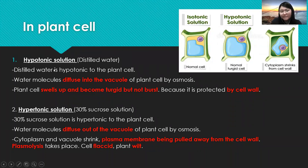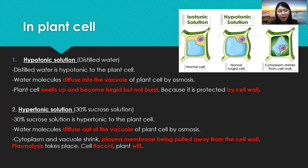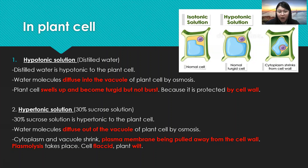In plant cells, when we put the plant cell into a hypotonic solution — distilled water — distilled water is hypotonic to the plant cell. Water molecules will diffuse from the distilled water into the vacuole of the plant cell by osmosis. When more and more water molecules diffuse into the vacuole, the plant cell will swell up and become turgid, but it won't burst. This is because plant cells have a cell wall, which protects the plant cell from bursting.